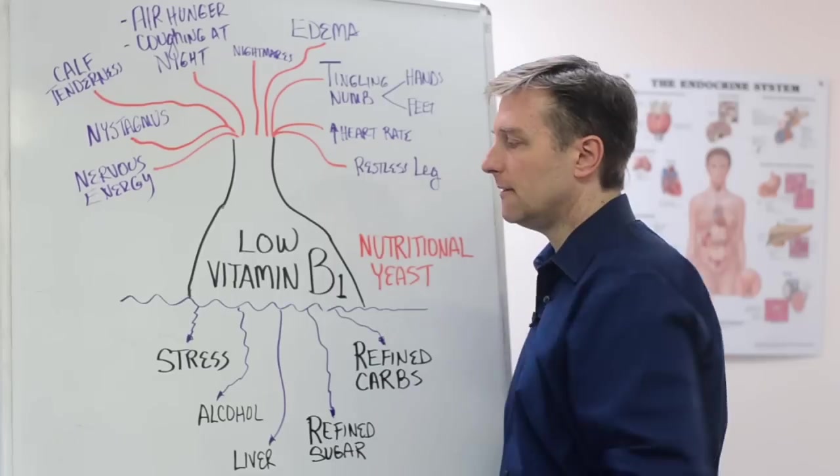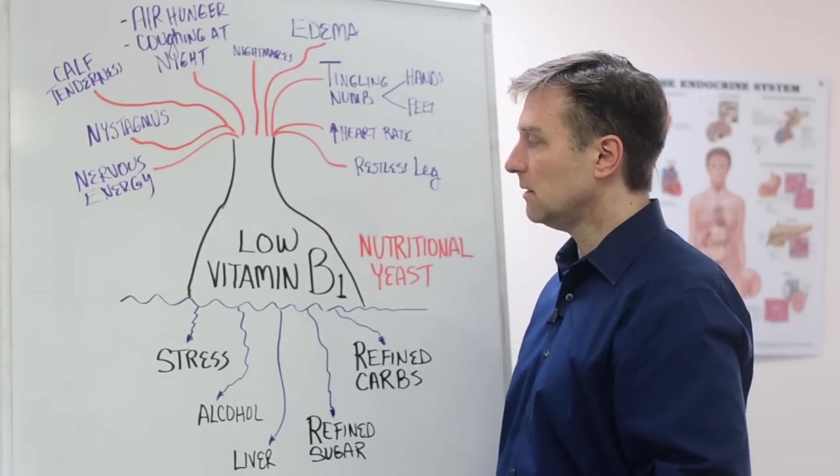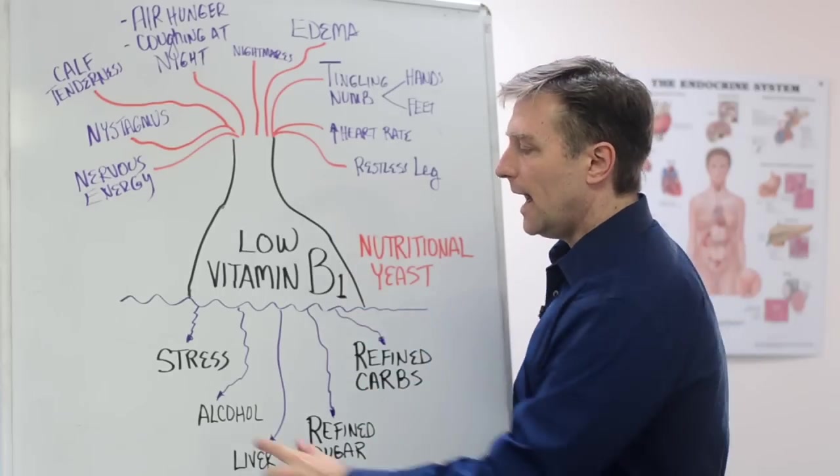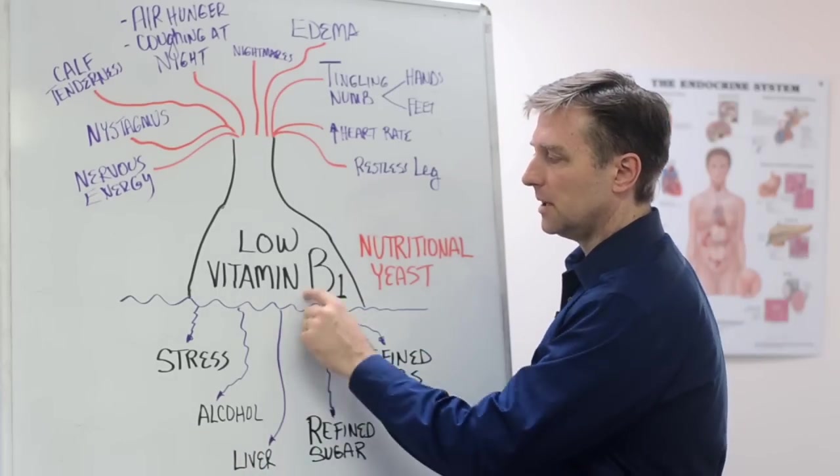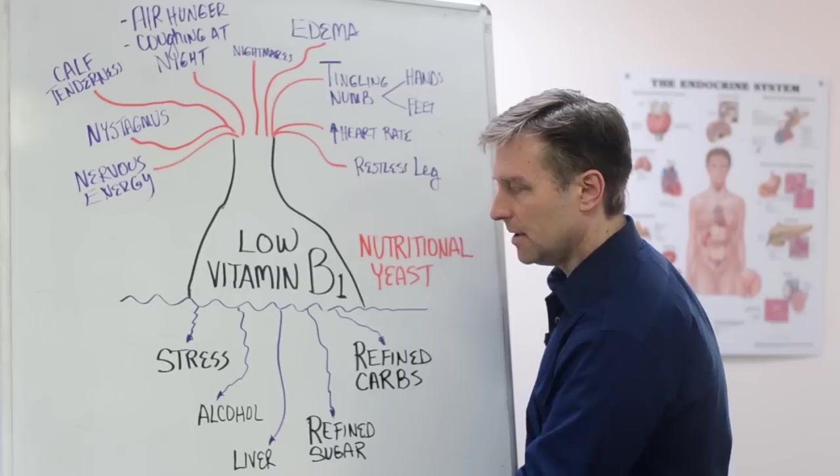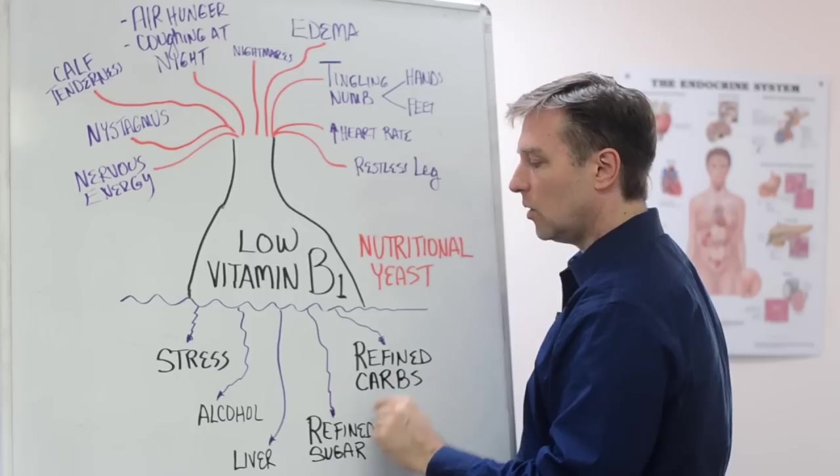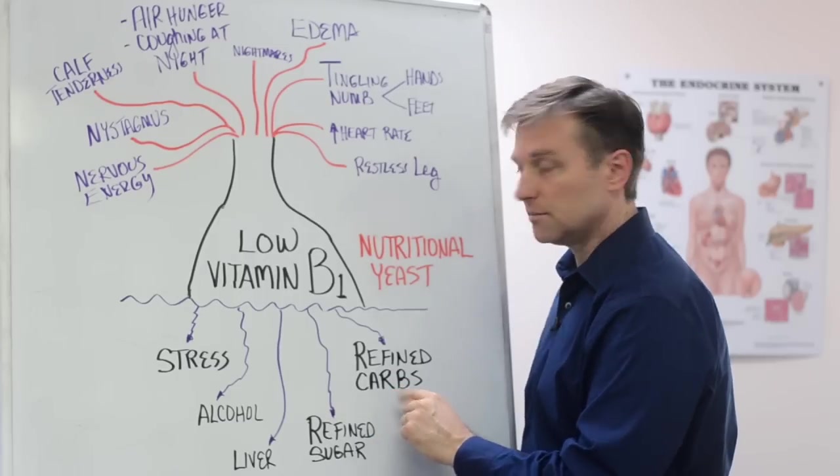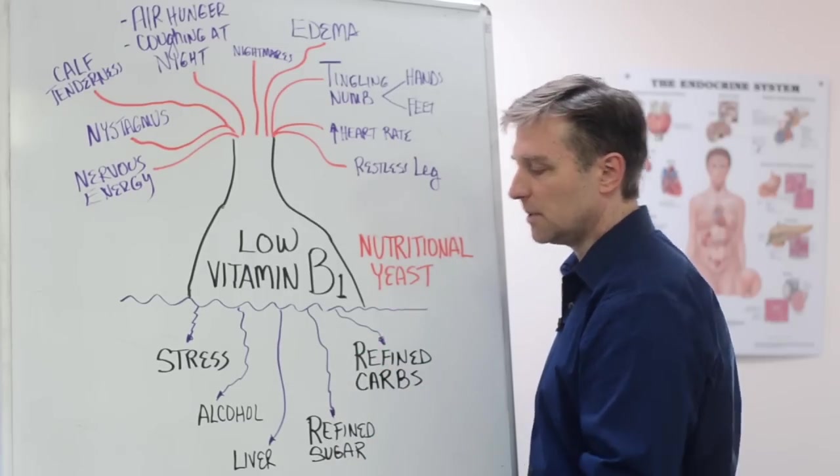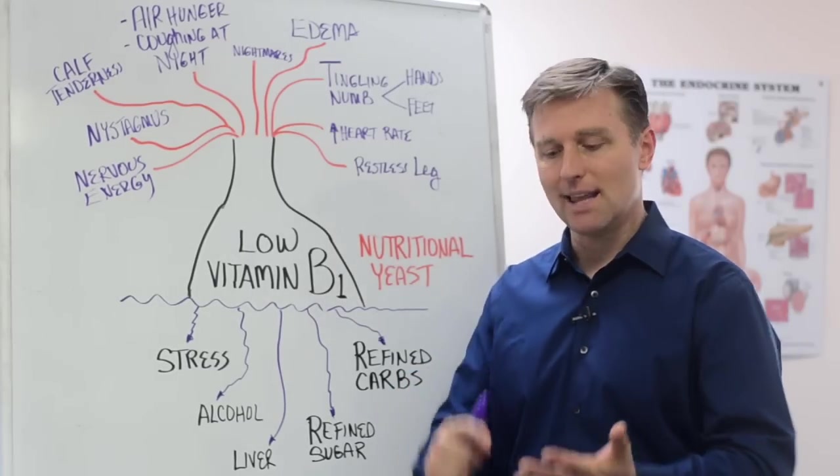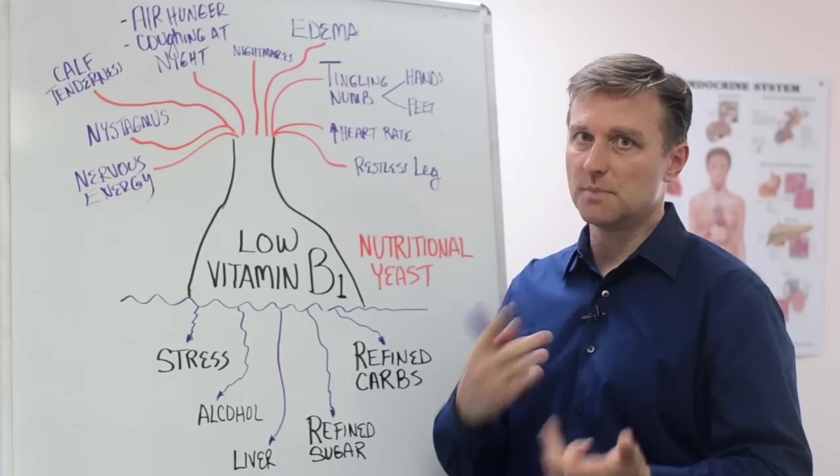When you use a lot of mental energy and physical energy, you deplete your B1 reserve. So alcohol will also deplete B1. Liver damage will deplete B1. And then of course, the classic sugar. You shouldn't be eating any sugar because that's going to deplete B1. And then refined carbohydrates. And that would be the breads, pasta, cereal, crackers, biscuits.